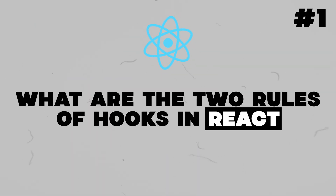What are the two rules of hooks in React? The two rules of hooks are: number one, you should always use hooks at the top of your component and avoid using them inside while or for loops — that will probably trigger very unexpected behaviors. Number two, you should only call hooks either inside other custom hooks or inside React components. You should never call them inside plain JavaScript functions.